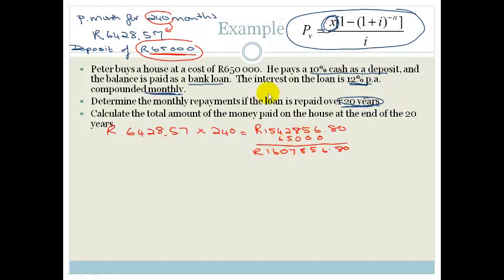Wow. So on a house of 650,000, Peter has paid 1,607,856.80. That is a lot of money. And that, Grade 12, is how you work out your present value and do calculations with the present value. Please go practice. You need to realize that you need to know the difference between future value and present value, which equation to use. And then go do the assessments at the end of the section.